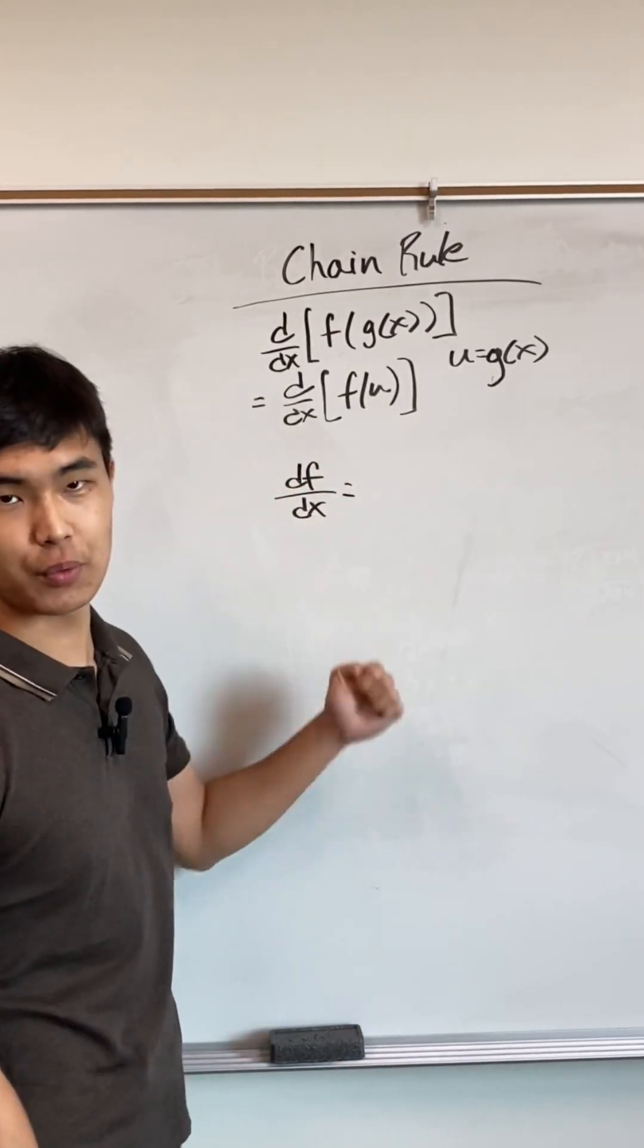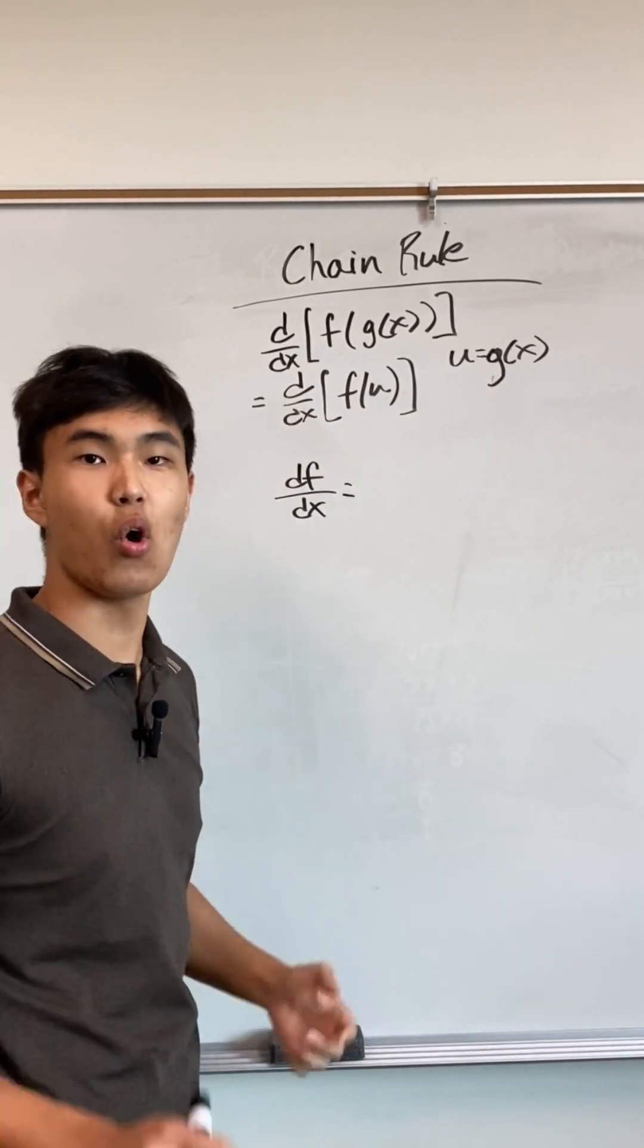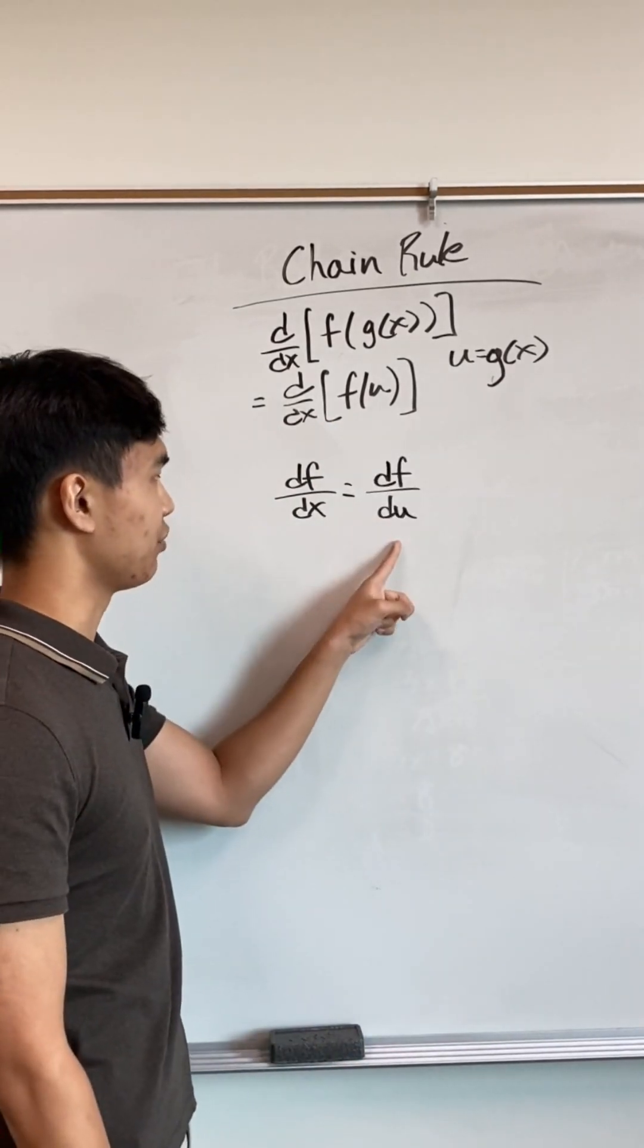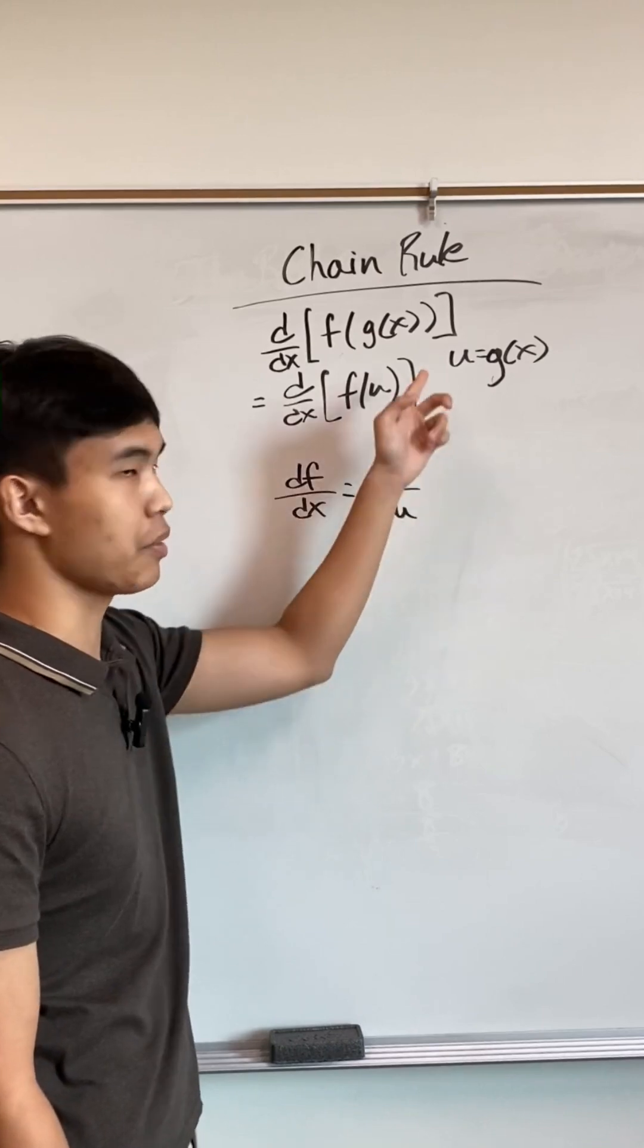This reduces to f of u. And look, we have f of an entity, so we can differentiate this, but only with respect to u. This is how far we've gotten so far. We figured out how to differentiate f, but only with respect to u, which is what we made up.